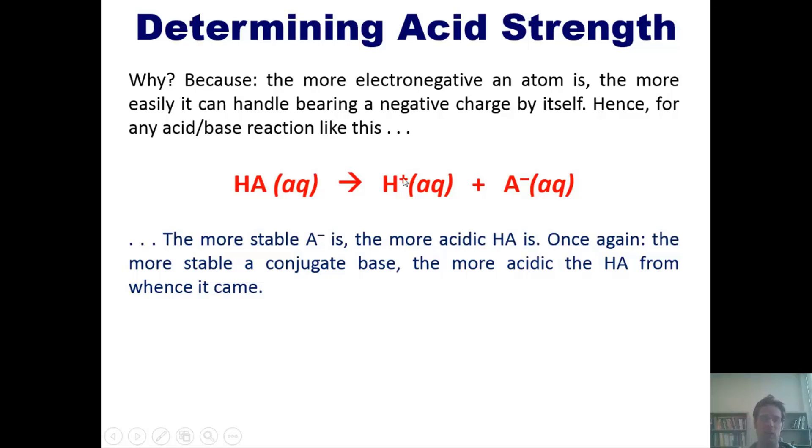The more stable this A- is, the more easily HA will lose a hydrogen. Therefore, the more stable A- is, the more acidic HA is. A- is made more stable if one, it's more electronegative, and/or two, it's big. The more electronegative an element, the better it can handle a minus charge. Furthermore, the larger an element, the better it can handle a negative charge.